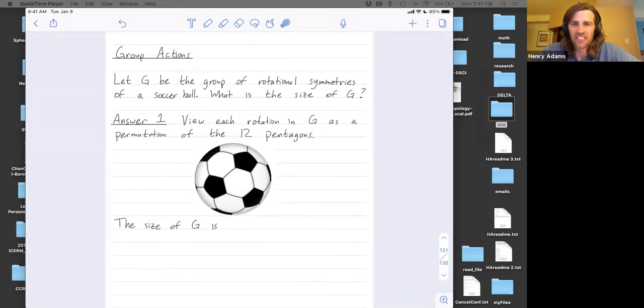So let G be the group of rotational symmetries of a soccer ball as drawn here. What's the size of this? How many different rotations can we do on the soccer ball that map the stitching pattern back onto itself?